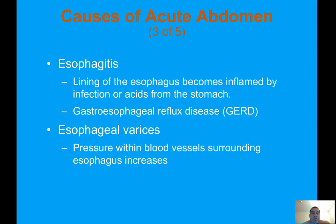Esophagitis occurs when the lining of the esophagus becomes inflamed by infection or acids from the stomach. Gastroesophageal reflux disease, or GERD, causes upper chest pain and is common in older adults, especially after eating spicy food. Esophageal varices occur when pressure within blood vessels surrounding the esophagus increases. Alcoholics commonly get esophageal varices and may cough up blood that does not look like coffee grounds emesis.